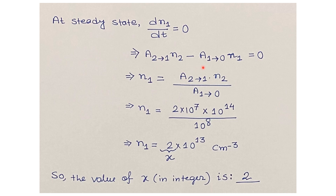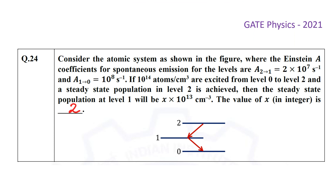Rearranging gives n₁ = (A₂₁ × n₂) / A₁₀. Substituting the values: n₁ = (2×10⁷ × 10¹⁴) / 10⁸ = 2×10¹³ per cm³. Therefore, the steady state population at level 1 is 2×10¹³ per cm³, and the value of X is 2.